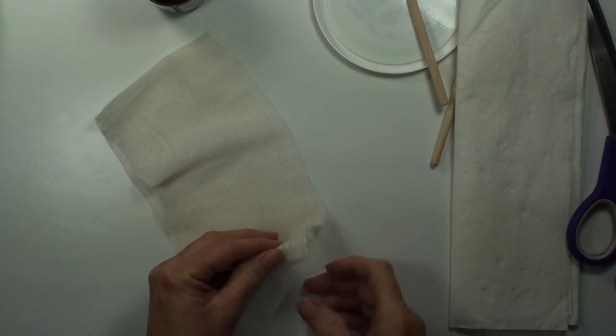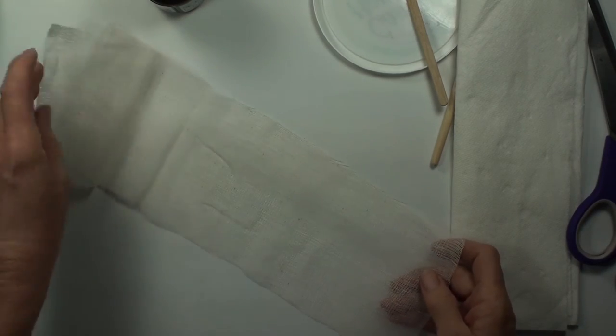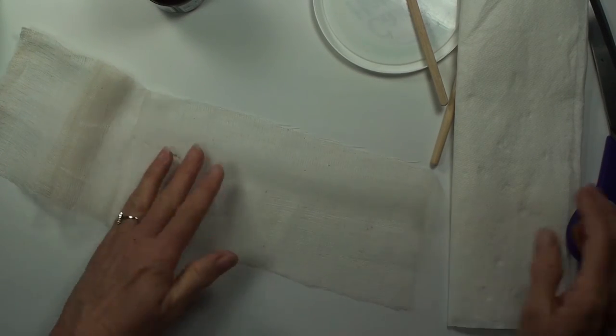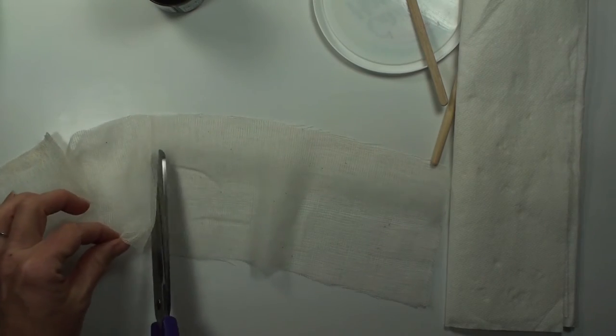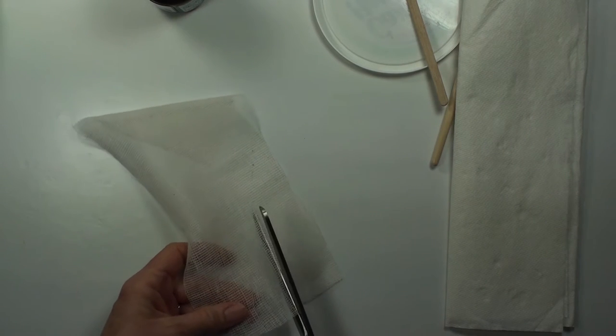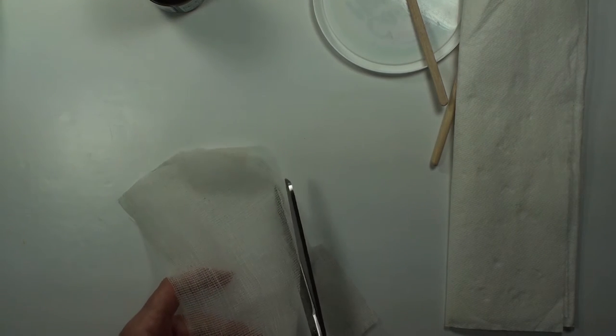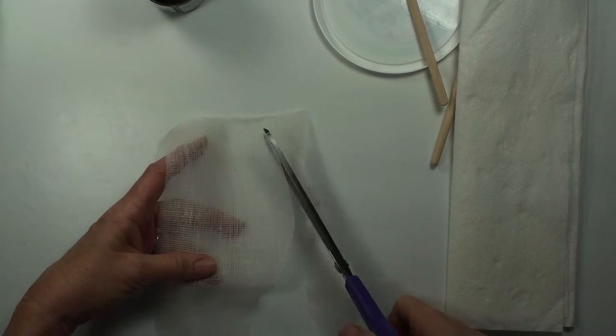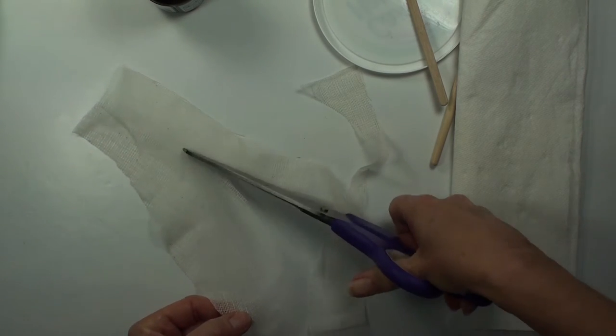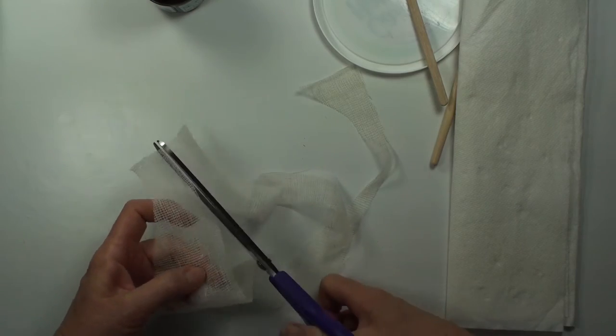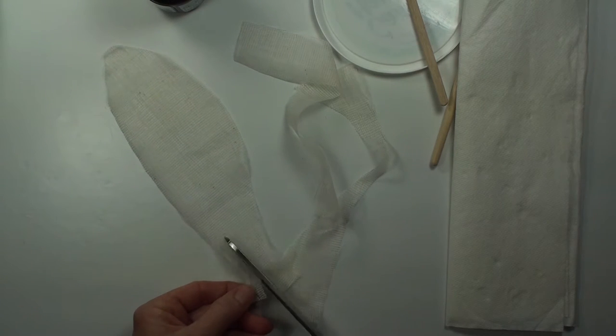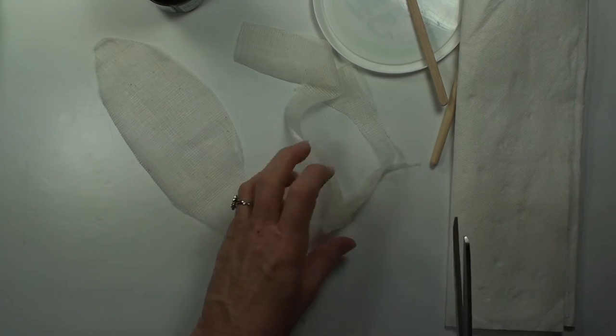We'll begin by deciding how big we want the feathers, and I cut a strip from my cheesecloth, that was about four inches wide, and I'm going to make my feather what would have been a quarter of that piece. You're going to take your scissors and cut a little bit exaggerated feather shape, a little bit larger than you want your feather to be in the end, so that the stem is about half of an inch or so, the stem which would be the quill.